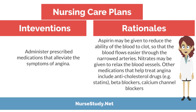Intervention: Administer prescribed medications that alleviate the symptoms of angina. Rationale: Aspirin may be given to reduce the ability of the blood to clot so that the blood flows easier through the narrowed arteries. Nitrates may be given to relax the blood vessels. Other medications that help treat angina include anti-cholesterol drugs such as statins, beta blockers, and calcium channel blockers.